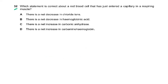Question 32: which statement is correct about a red blood cell that has just entered a capillary in a respiring muscle? A respiring muscle is taking in oxygen and producing more carbon dioxide. More carbon dioxide means more carb-amino haemoglobin — 5% of CO₂ is in the plasma, 10% as carb-amino haemoglobin, and the rest as bicarbonate ions. The rest of the answer choices are all wrong.